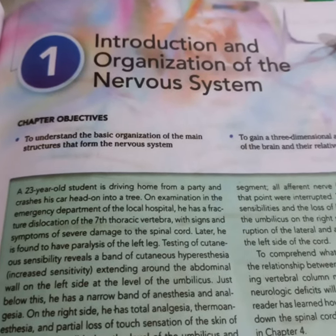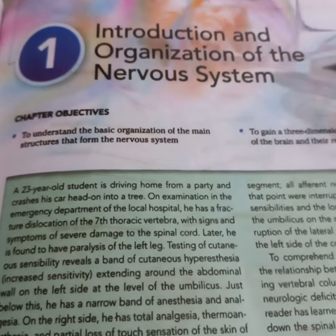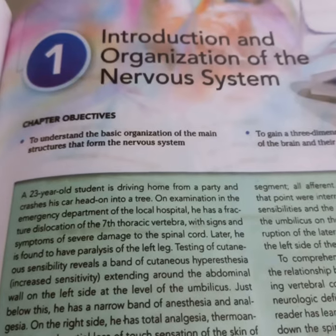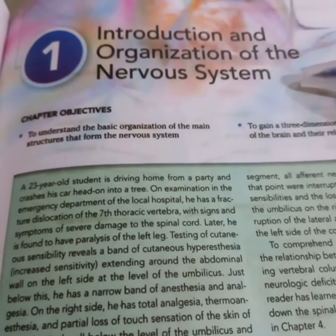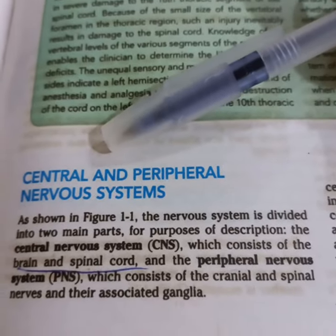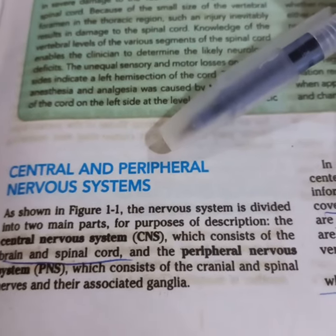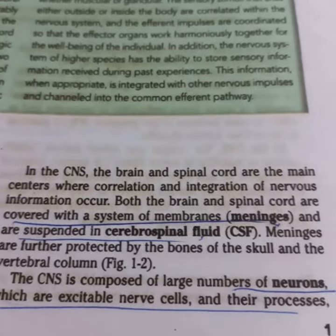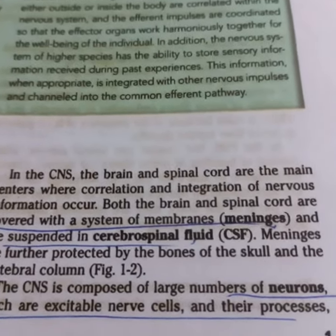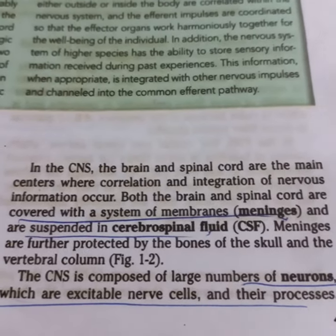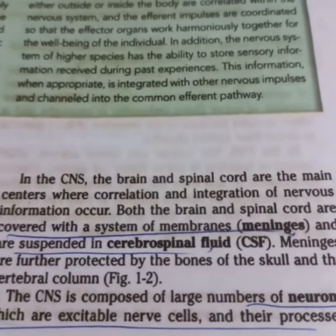To start with neuroanatomy, we go to the introduction and organization of the nervous system. The nervous system is the system of coordination by which all body parts coordinate. There are two types: central and peripheral. Central includes brain and spinal cord, while peripheral includes nerve fibers and their ganglia. Both brain and spinal cord are enclosed by three layers of membrane known as meninges: pia mater, arachnoid mater, and dura mater. These are suspended in the CSF, cerebrospinal fluid.